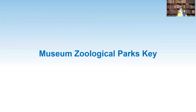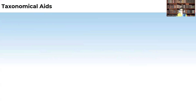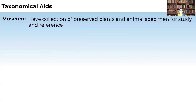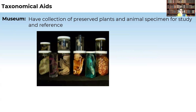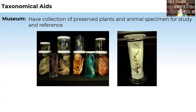Another taxonomical aid is zoological parks and museums. A museum has a collection of preserved plants and animal specimens for reference and study. We can know the characteristics and names of animals which we would not see in our day-to-day life. All these specimens are preserved and can be seen in museums.